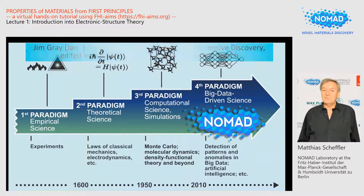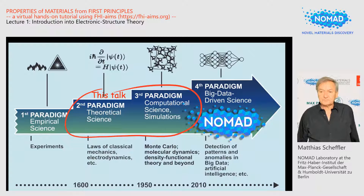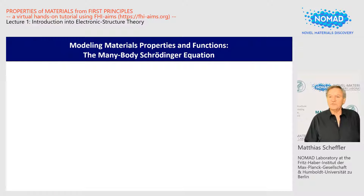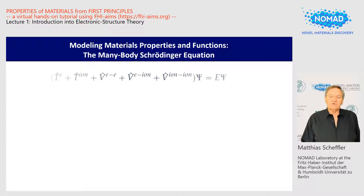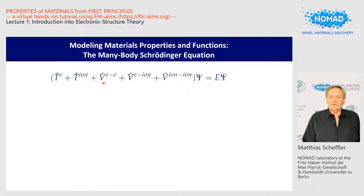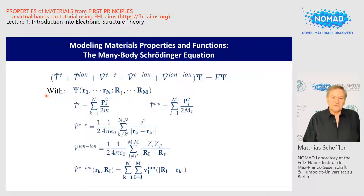Today's tutorial deals with the second and third paradigm. Modeling materials properties and functions means, if you want to do it reliably, solving the many-body Schrödinger equation. The Hamiltonian has the components: the electron kinetic energy, the kinetic energy of the ions or nuclei, the interaction between electrons, the interaction between electrons and ions or nuclei, and the ion-ion or nuclear-nuclear interaction. The wave function coming out of it is a very complicated beast — it depends on all the positions of the electrons from R₁ to Rₙ, typically 10²³, and all the positions of the nuclei from R₁ to Rₘ, also typically of the order of 10²³.